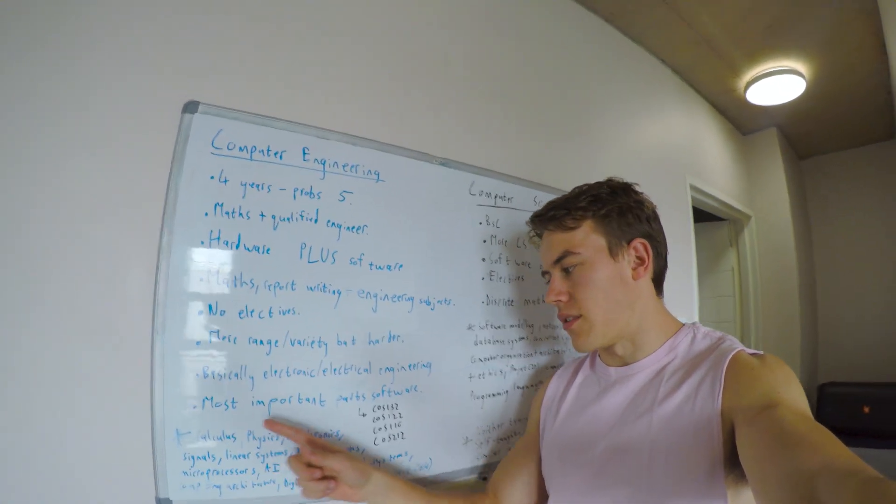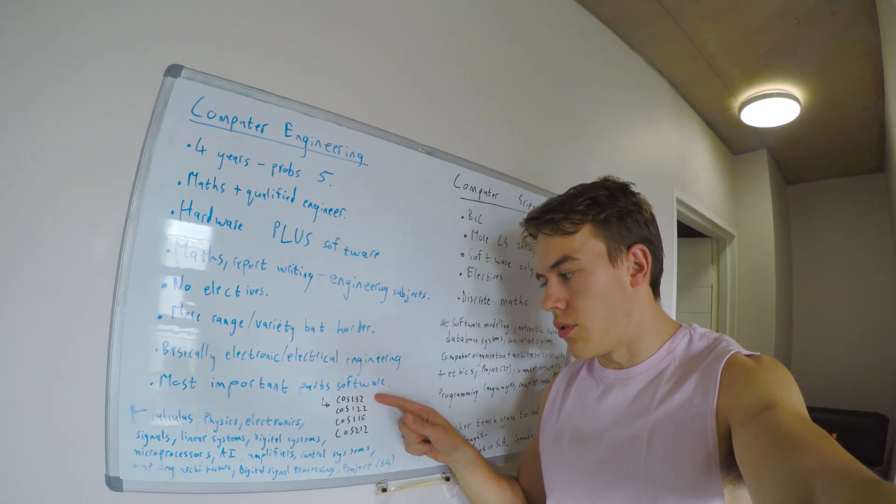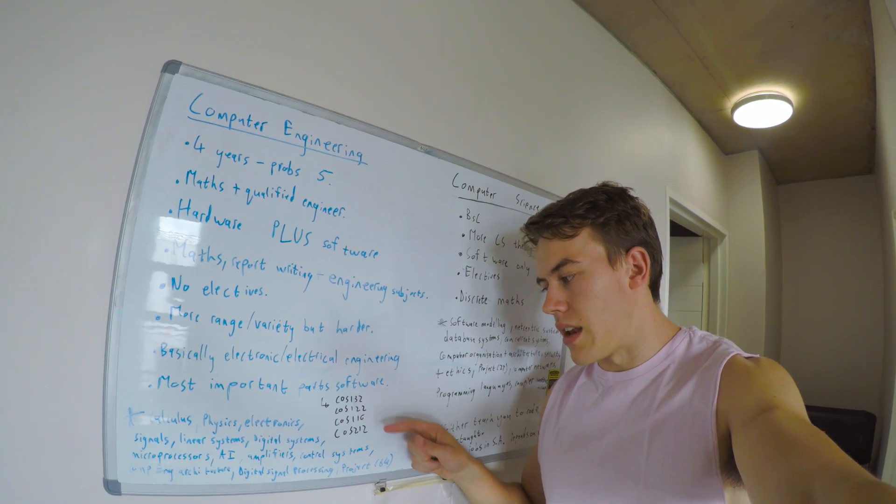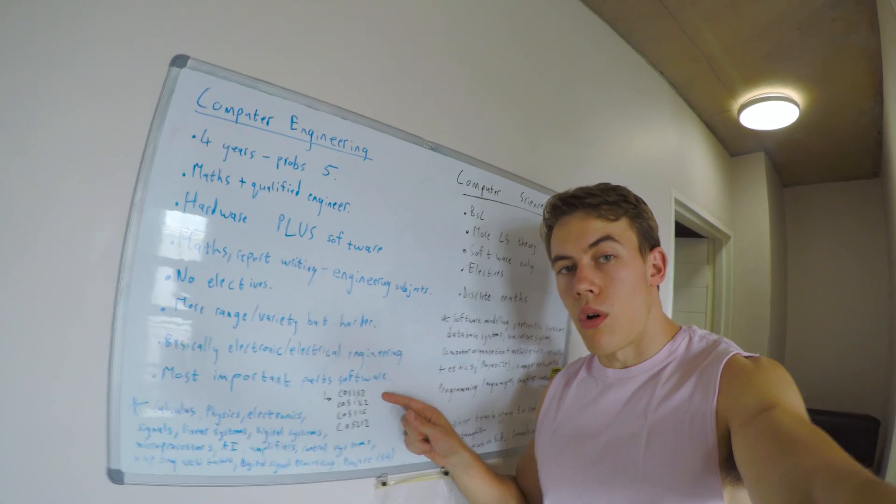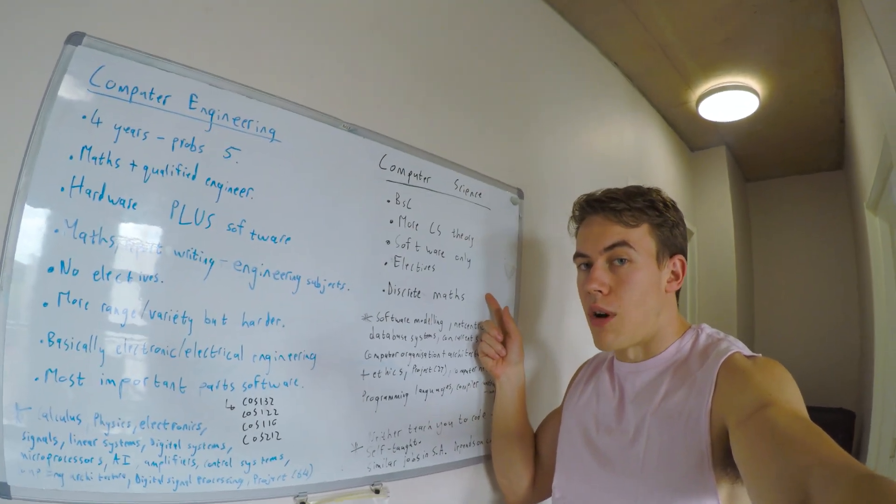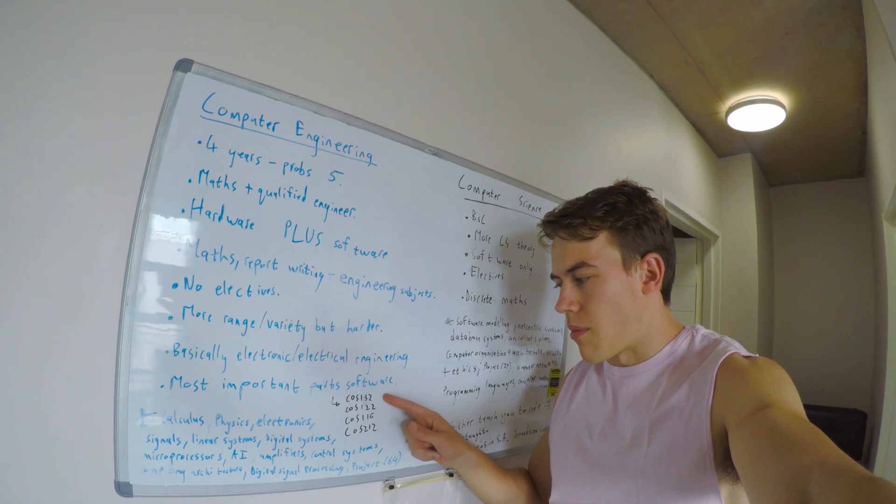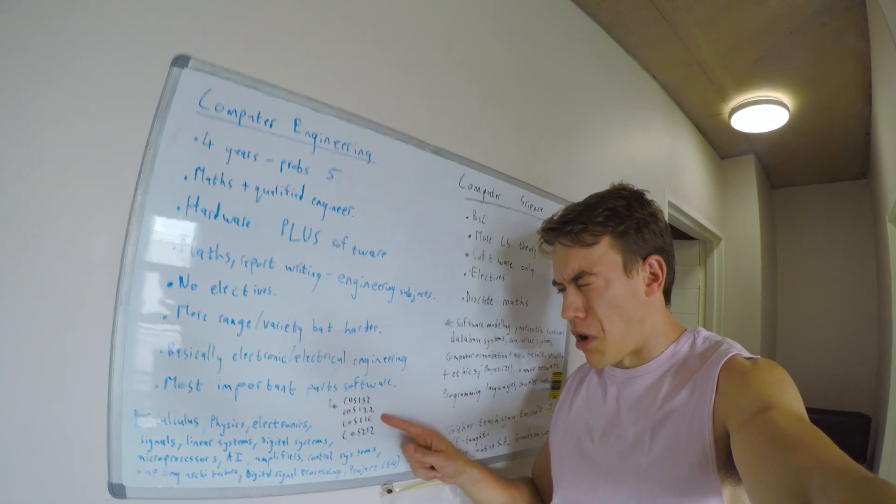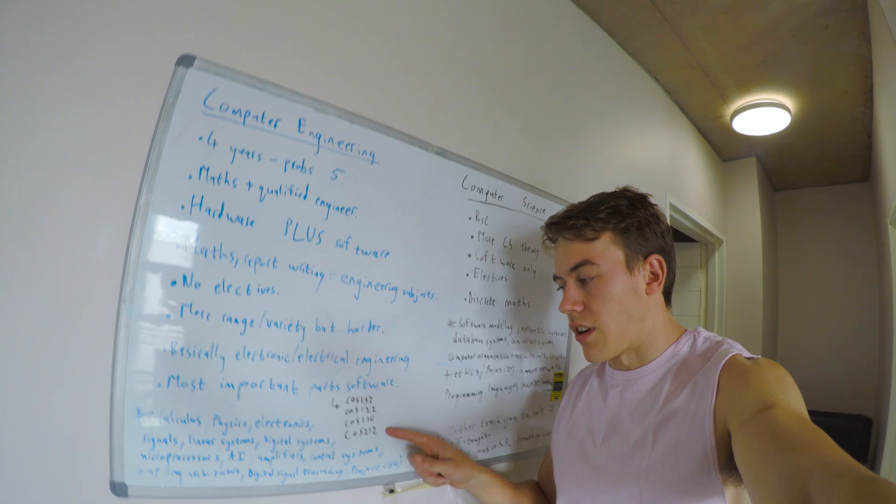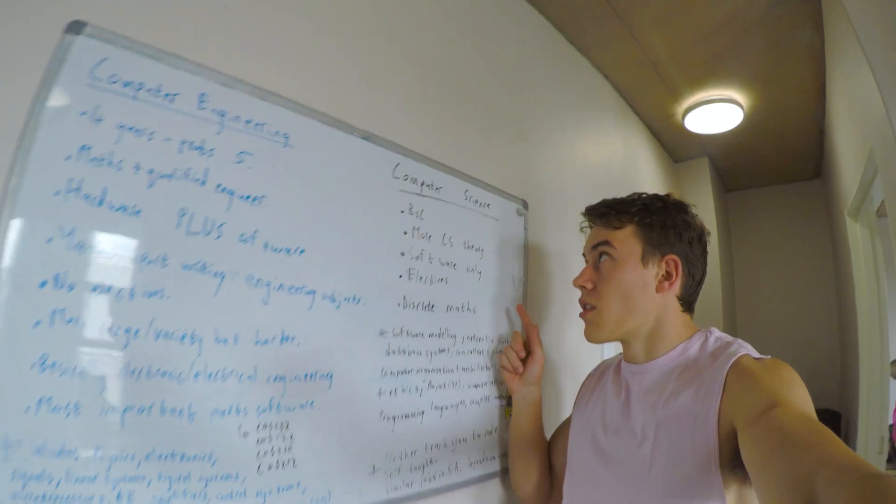As I wrote here, the most important parts of software are included in the computer engineering degree. These courses here, COS132, COS122, COS110, COS212, those are all computer science modules, and the computer science degree does all of those as well, plus extra. But this is introduction to programming, operating systems, introduction to object-oriented programming, and data structures and algorithms. Some of the most important parts of computing that are covered in computer science.